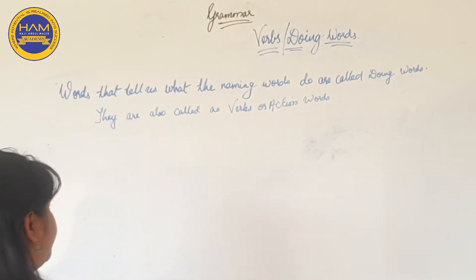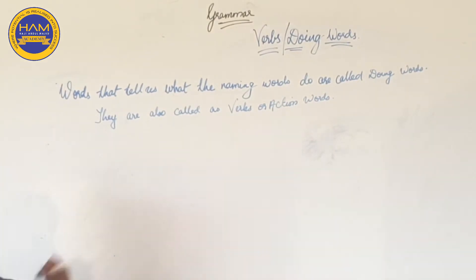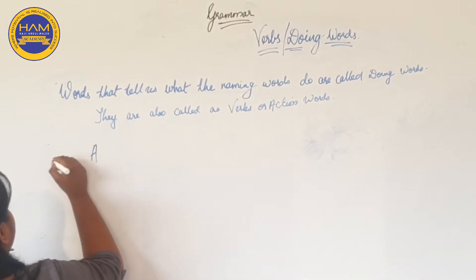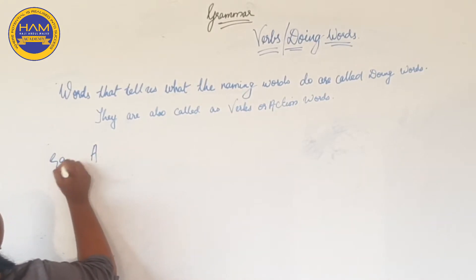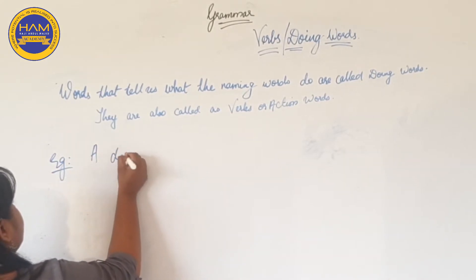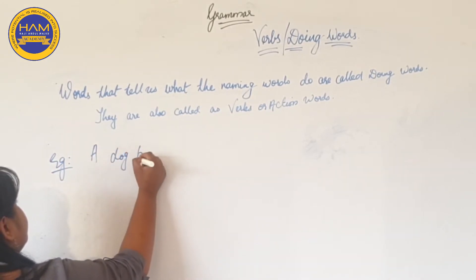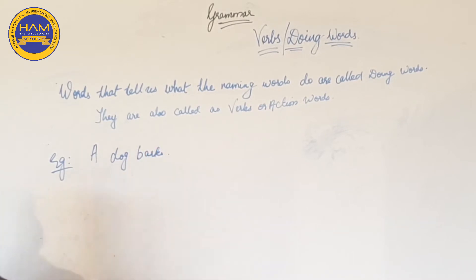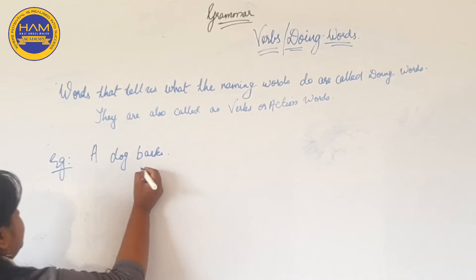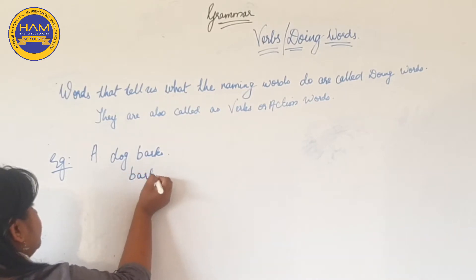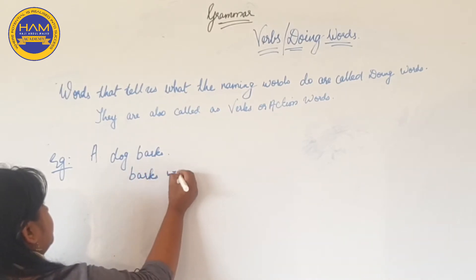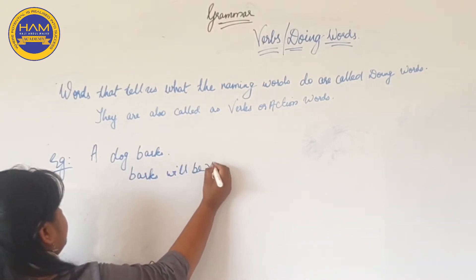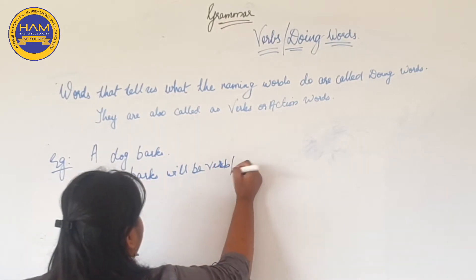For example, a dog barks. What does a dog do? A dog barks. So here 'barks' will be the verb or doing word.